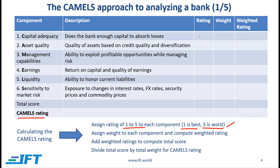Say we are evaluating a bank and the capital adequacy is really good, so we assign a score of 1. Asset quality is average, so we assign a rating of 2.5, which is halfway between 1 and 5. Management quality is a little better than average, so we assign 2. Return on capital and quality of earnings is a little worse than average, so we assign 3. The liquidity position is really good, so we assign 1, and sensitivity to market risk is low — which is a good thing — so we assign 1.